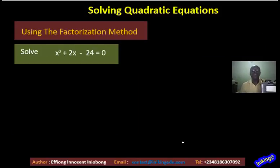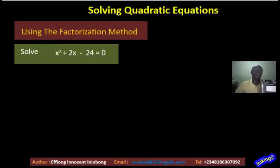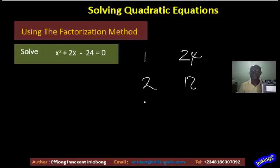I will take one more example, still making use of the number 24. Here I have x squared plus 2x minus 24. Let's increase our speed this time. Factors of 24: 1 times 24, 2 times 12, 3 times 8, 4 times 6. Which of these four pairs will replace our plus 2x?